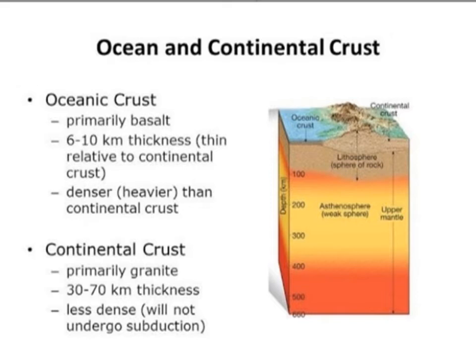Oceanic crust thickness is about 6 to 10 km, and continental crust thickness is about 30 to 70 km. Oceanic crust is denser than continental crust, and continental crust is less dense than oceanic crust.